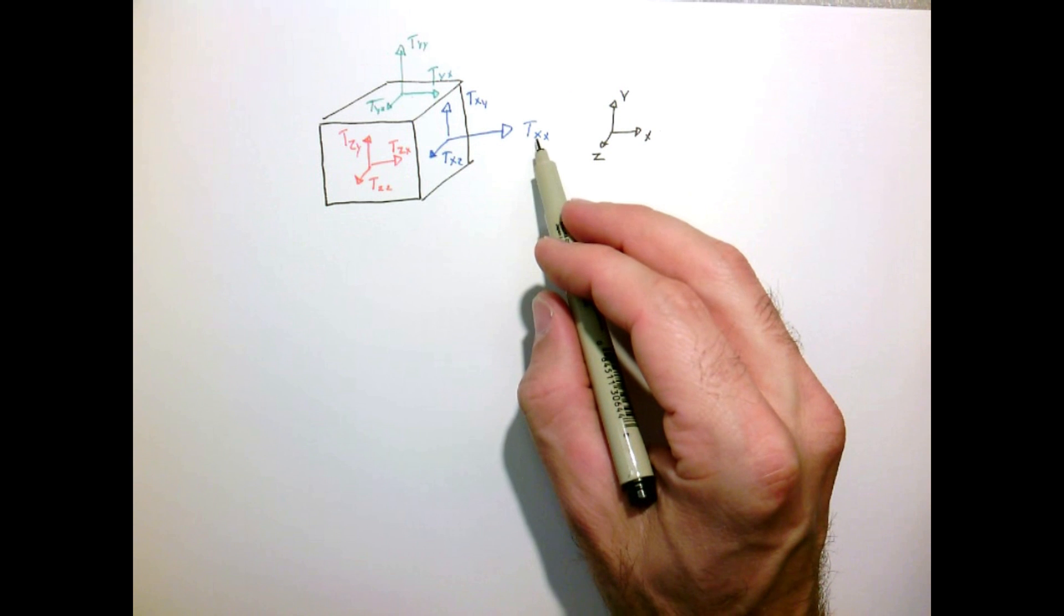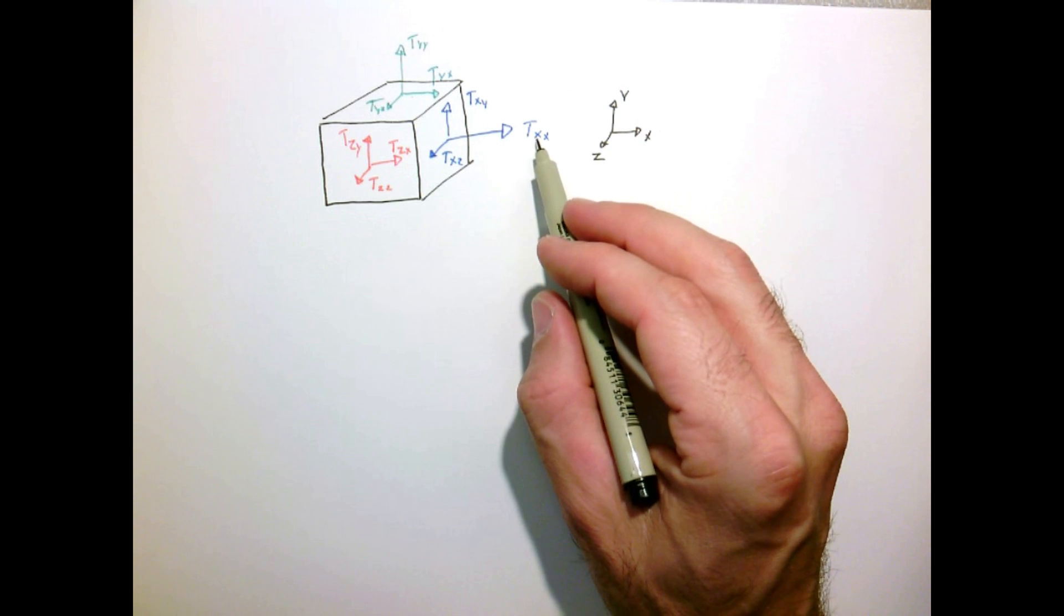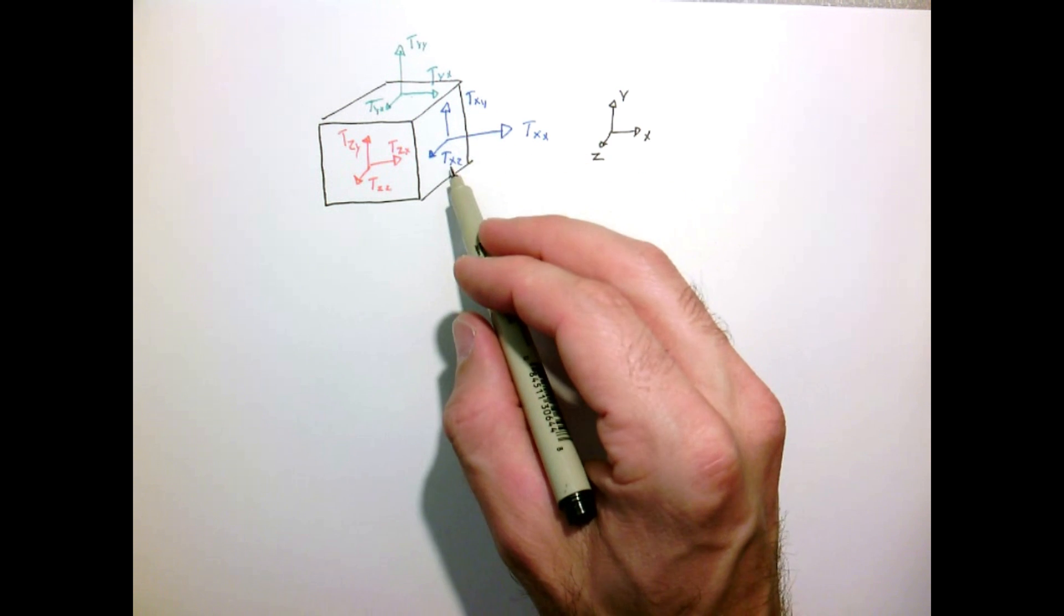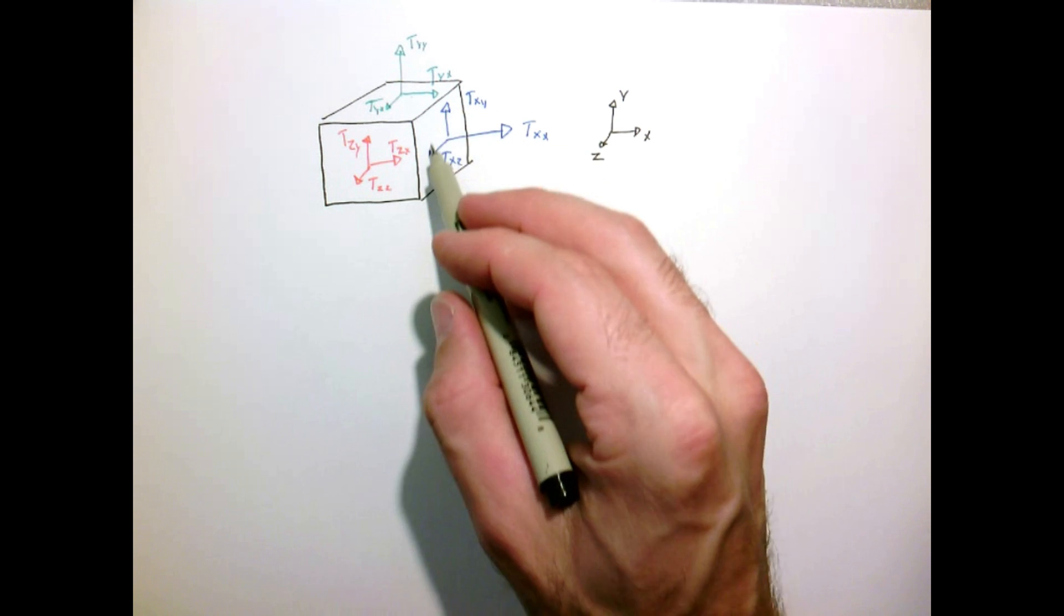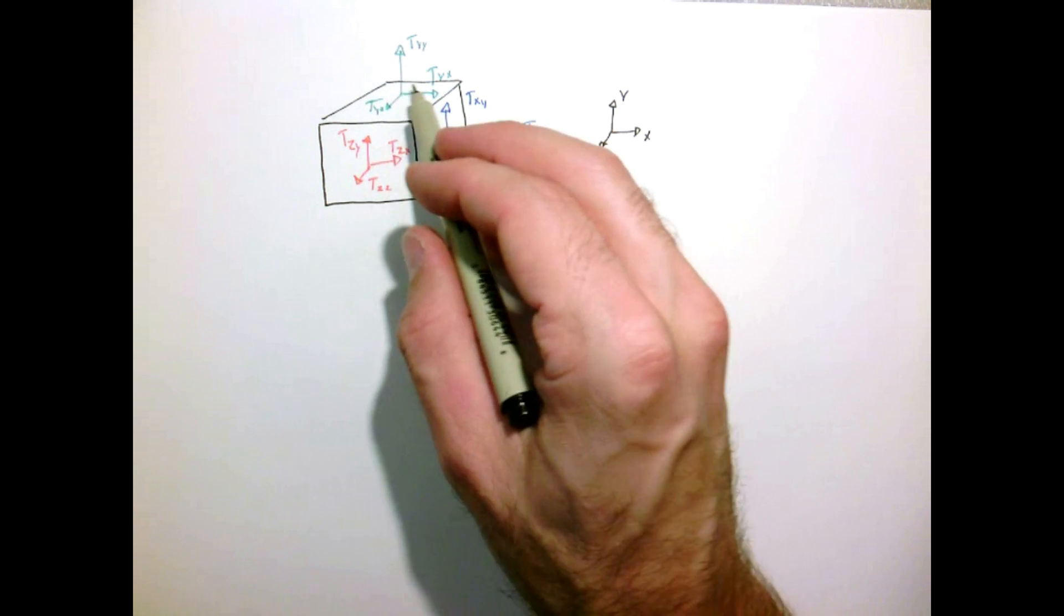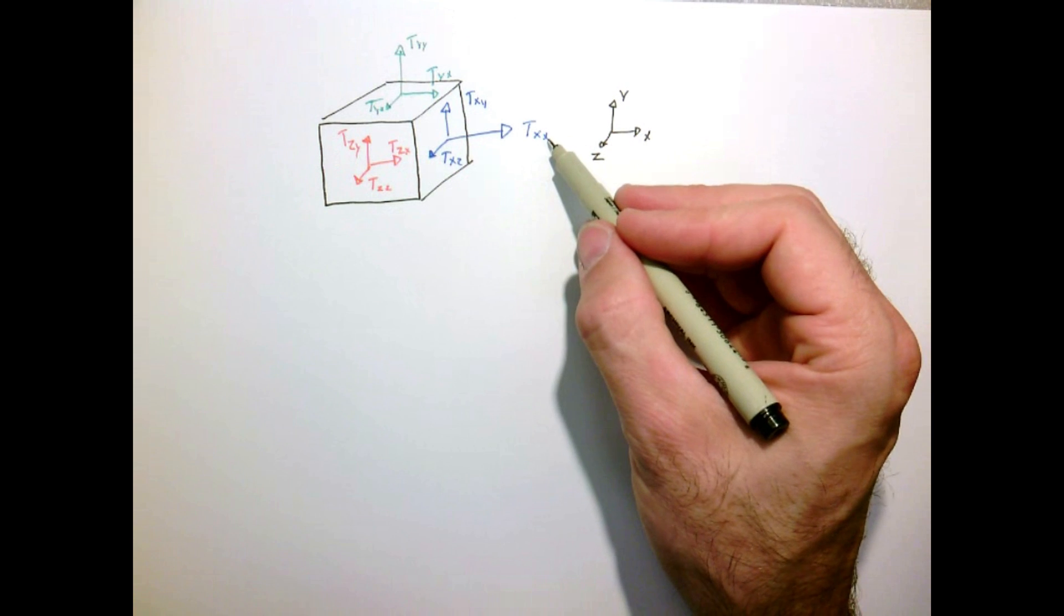So the notation, the first index, x, denotes the direction of the normal vector. So τ_xx, τ_xy, τ_xz are all ones acting on this face. τ_yx, τ_yy, τ_yz are all ones acting on this face, and the second one is the direction of the force.